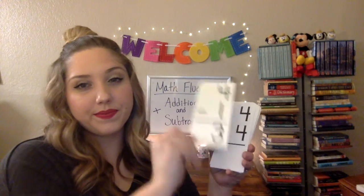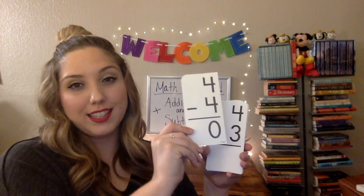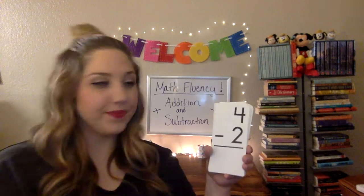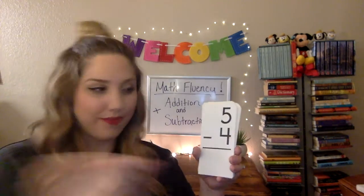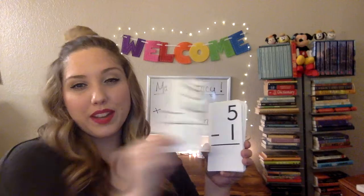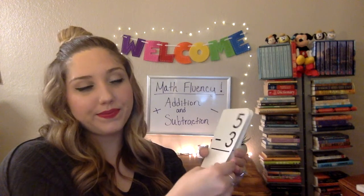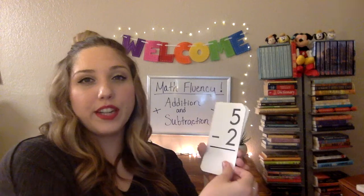4 minus 1 is 3. 4 minus 4 is 0 — we took away the whole number. 4 minus 3 is 1. 4 minus 0 is 4 — same number on top. 4 minus 2 is 2. 5 minus 5 is 0 — took away the whole number. 5 minus 4 is 1. 5 minus 1 is 4. 5 minus 3 is 2. 5 minus 0 is 5 — we didn't change it.